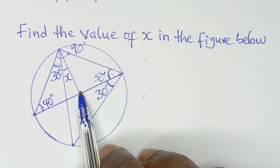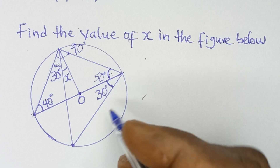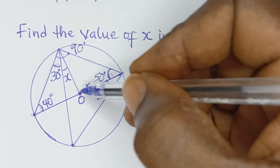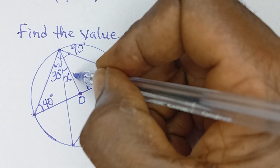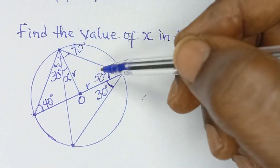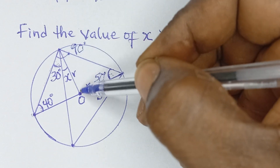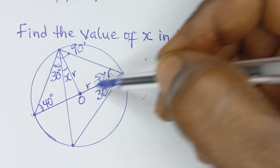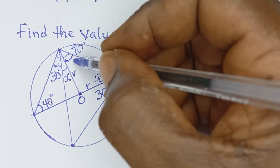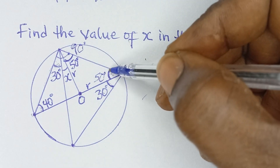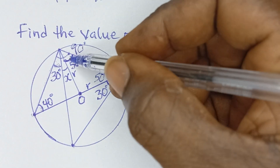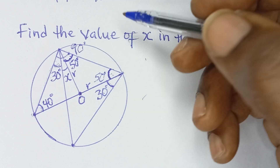Looking at the line from the center of the circle to the circumference, that line is a radius. Similarly, another line from the center of the circle to the circumference is also a radius. Since both lines are radii, they are equal, which means this triangle is an isosceles triangle — a triangle that has two equal sides. Therefore, the base angles of this isosceles triangle are equal. So if this angle is 50 degrees, then this base angle is also 50 degrees.